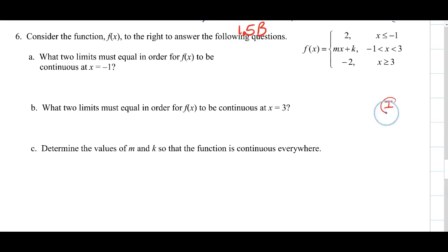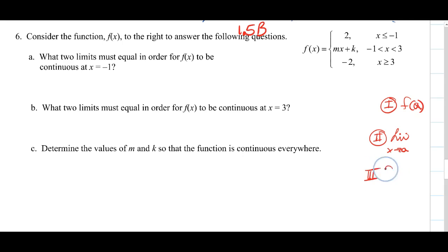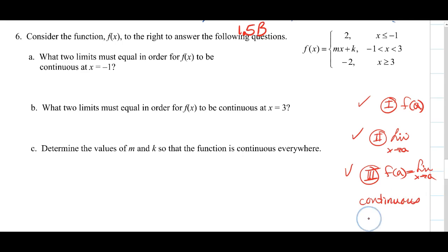In the past lesson, we looked at the definition of continuity and we had three parts. First, does the function exist, and if so, what does it equal? Secondly, does the two-sided limit exist, and if so, what does it equal? And then three, does the function equal the two-sided limit? If all three are yeses, then my function is continuous at x equals that value — 1, 5, 2, negative 3, whatever that value is.